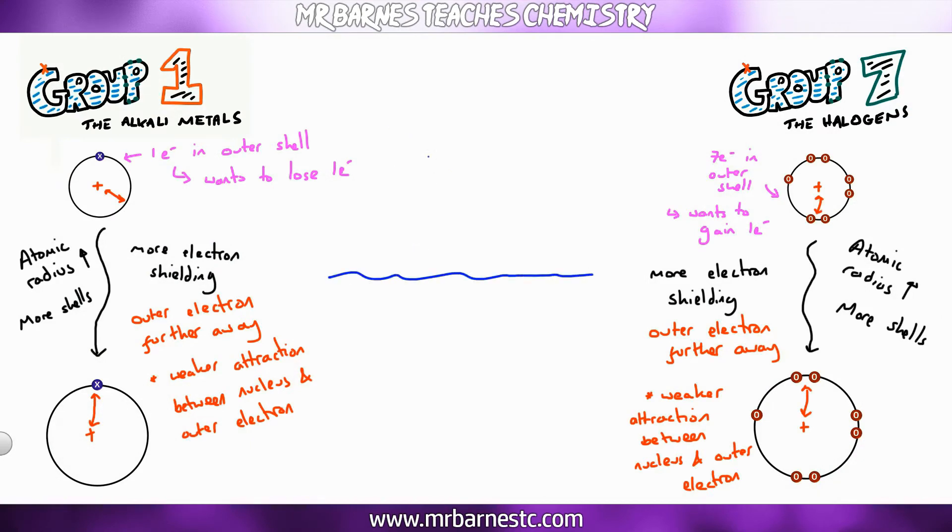The difference is group 1 wants to lose one and group 7 wants to gain one. So for group 1 it's easier to lose that electron because the force of attraction is weaker. Therefore it's more reactive as you go down the group. But with group 7 it's harder to gain that electron because the force of attraction is weaker. So the explanation is the same except for this one wants to gain it which means it's less reactive. And that brings this revision summary video to an end.